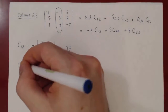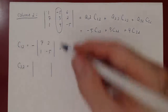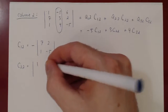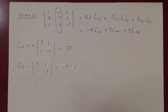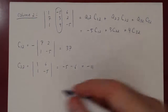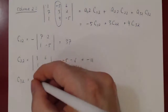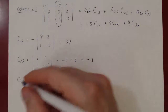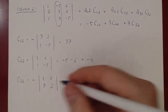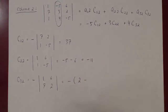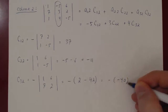C22: negative 1 to the power 4 is positive 1. Deleting row 2 and column 2 gives (1, 6; 1, -5). The determinant is -5 minus 6, which is negative 11. For C32: negative 1 to the power 3 plus 2 is -1. Deleting row 3 and column 2 gives (1, 6; 7, 2). The determinant is 2 minus 42, which is -40. So C32 = negative of -40 = positive 40.